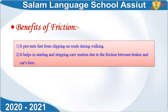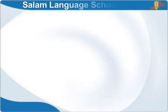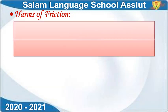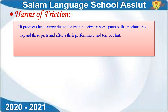Number two: it helps in starting and stopping car motion. The concept of brakes depends on friction — due to the friction between brakes and car tires. Now, does friction have any harms? Yes, friction also has harms. The friction between internal parts causes machines to heat up, and that heat causes fusion of parts, meaning parts wear out and need repair — resulting in financial cost.